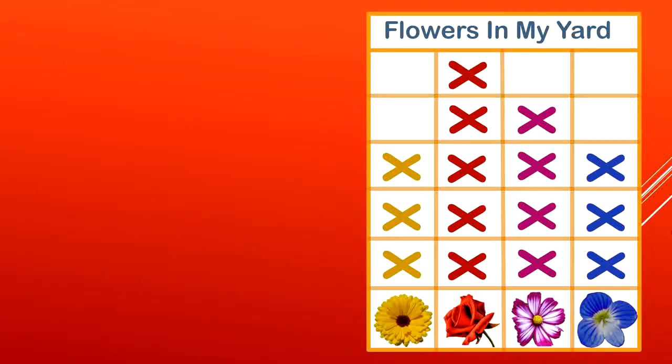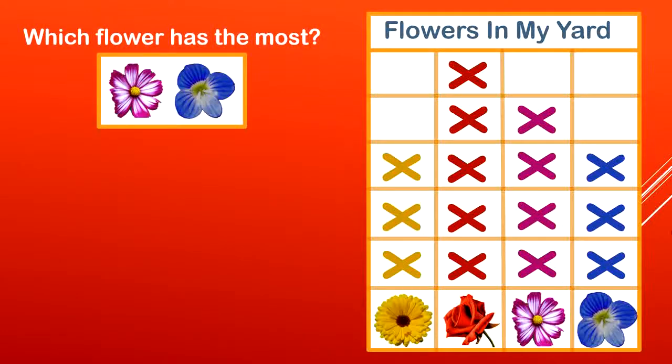Now let's work on answering some questions about my bar graph. Which flower has the most? Notice I'm just asking you to compare the purple and blue flowers. Which one has the most? Look at the bar graph. That's the purple flowers. The purple flowers have four and the blue flowers have three.